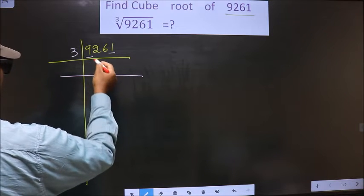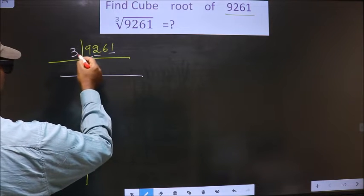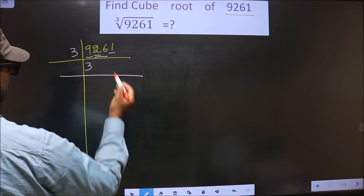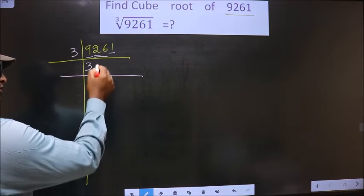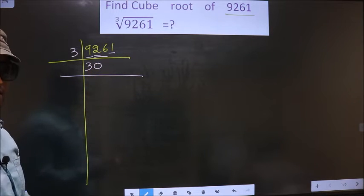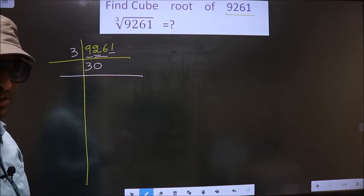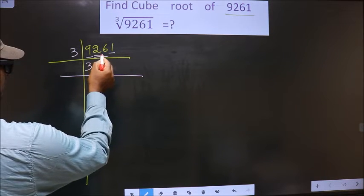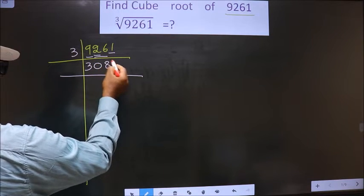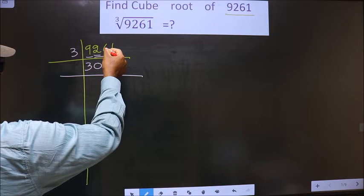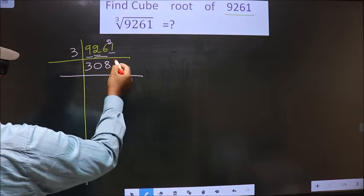Now, the first number is 9. When do we get 9 in the 3 table? 3 times 3 is 9. Next number is 2 — smaller than 3, so we should take 2 numbers, that is 26. Whenever you are taking 2 numbers, compulsory you should put 0 — it is a rule, remember that. Here we have 26; a number close to 26 in the 3 table is 3 times 8 = 24. 26 minus 24 is 2, carried forward making it 21. When do we get 21 in the 3 table? 3 times 7 is 21. So we get 3087.